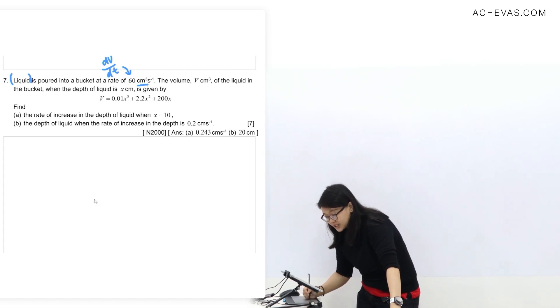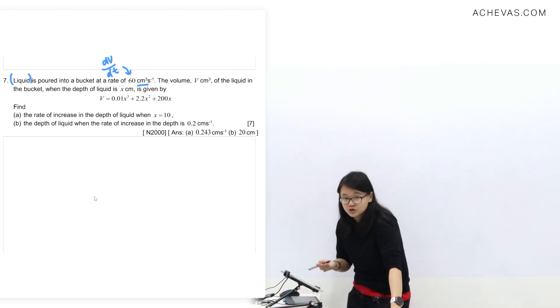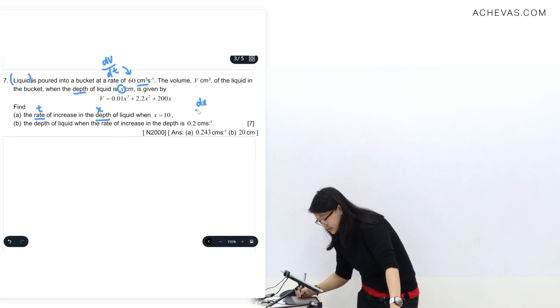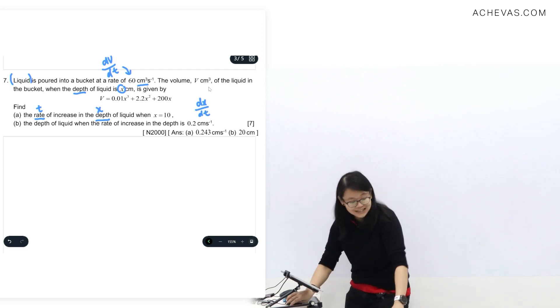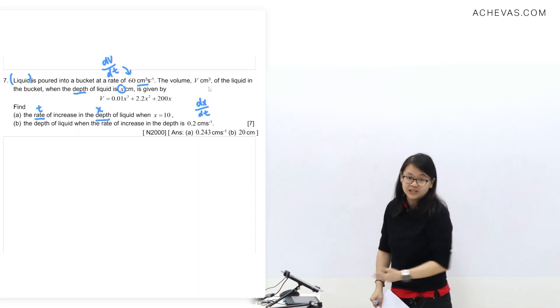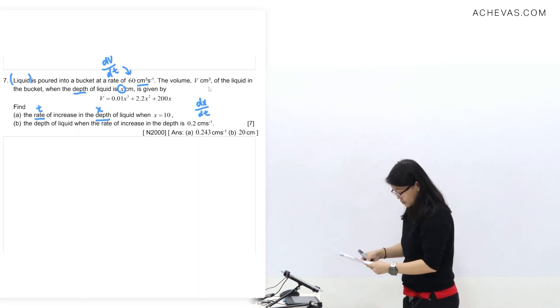And then volume is given. You can start doing a differentiation if you want. Then we need to find the rate of increase in the depth. If you read the question, the depth of the liquid is given as x, so this is x. In question A, we are going to find dx/dt.